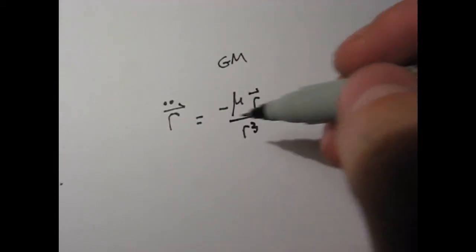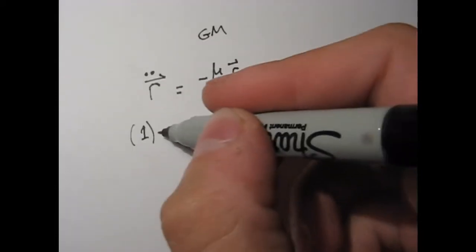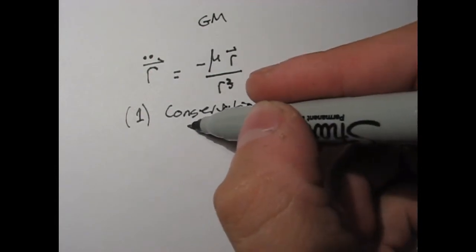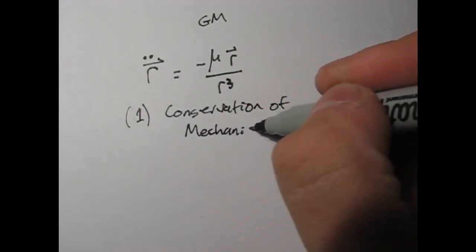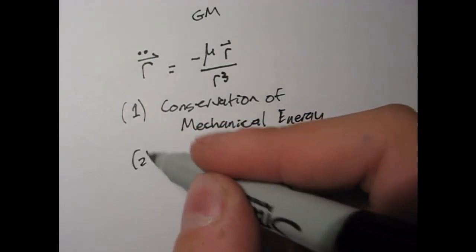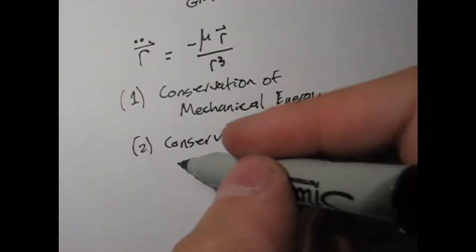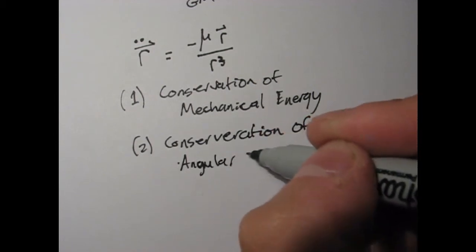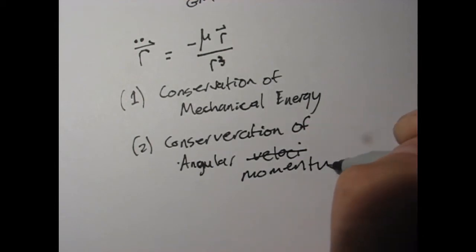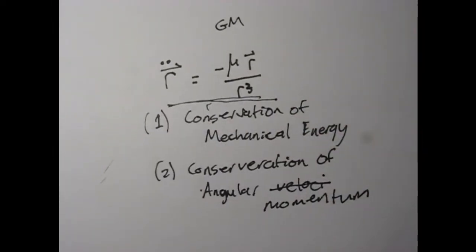So basically what we're going to do in this video is derive: one, the conservation of mechanical energy, and conservation of angular momentum. And we're deriving these two things from that. Let's start.